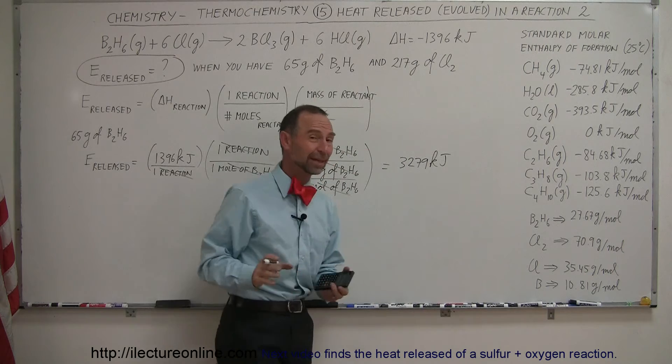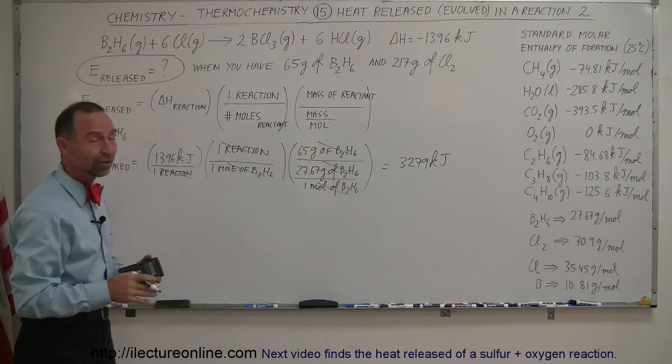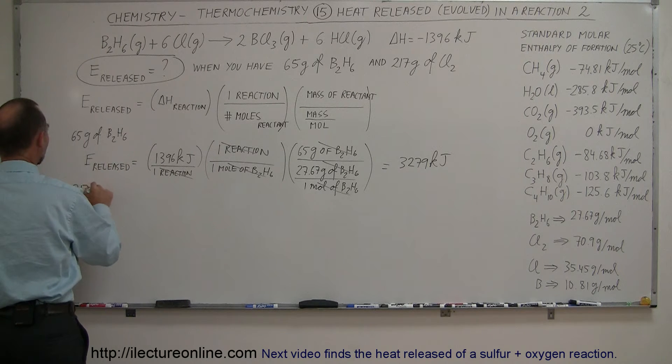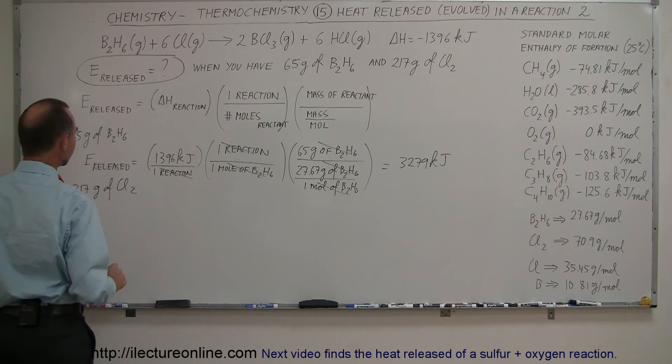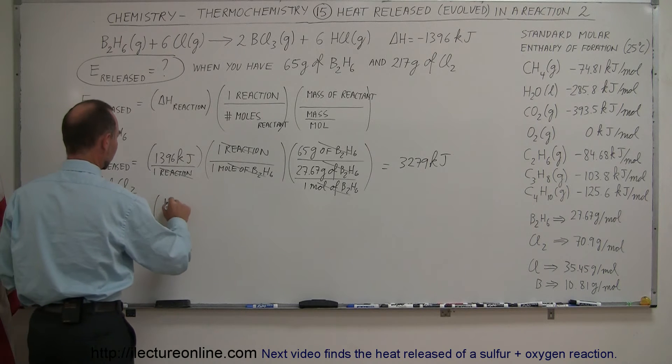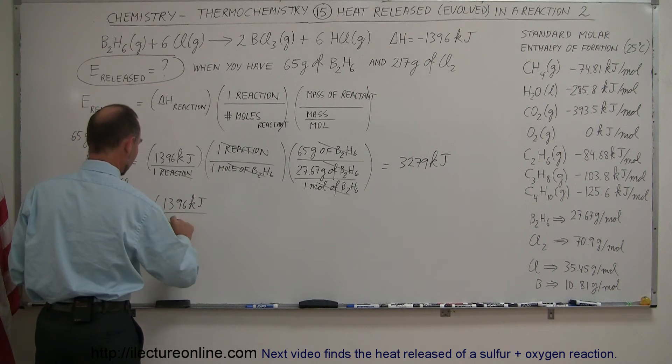Now let's see if we get more energy released or less energy released when we limit ourselves to 217 grams of chlorine gas. So now we're going to do this again with 217 grams of chlorine gas. Energy released equals the energy for one reaction, which is 1,396 kilojoules. So this is all the same. One reaction.